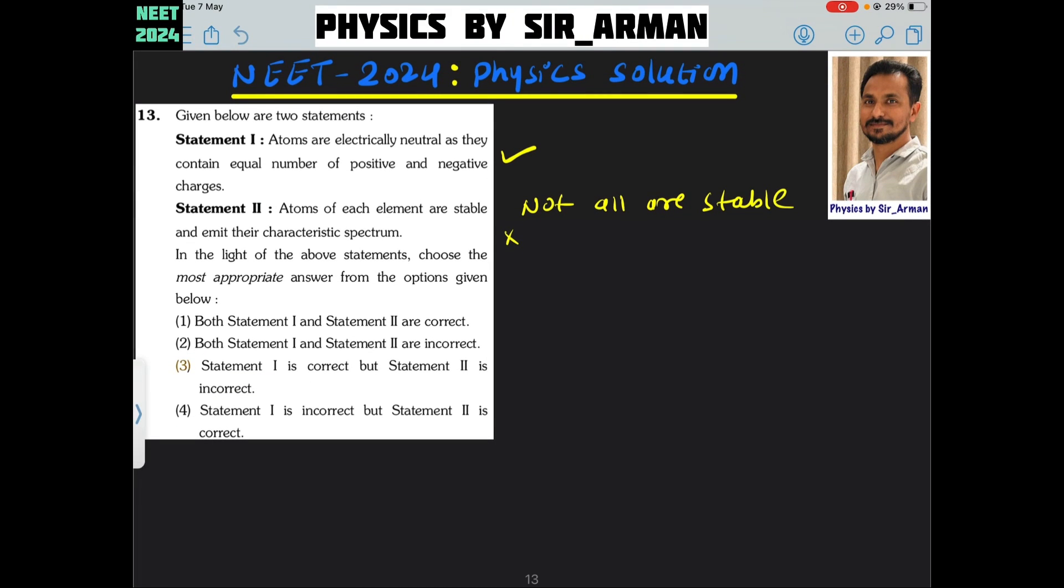Question number 13. Given below are two statements. Statement 1: Atoms are electrically neutral as they contain equal number of positive and negative charges. Yes, it is correct. All atoms are electrically neutral.